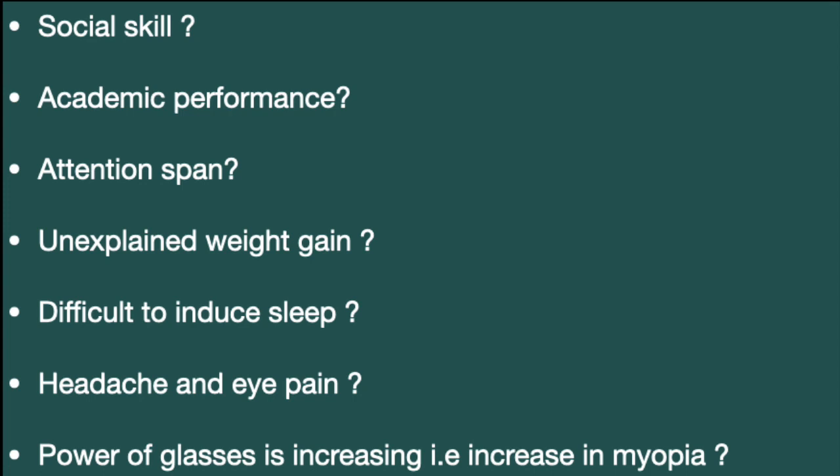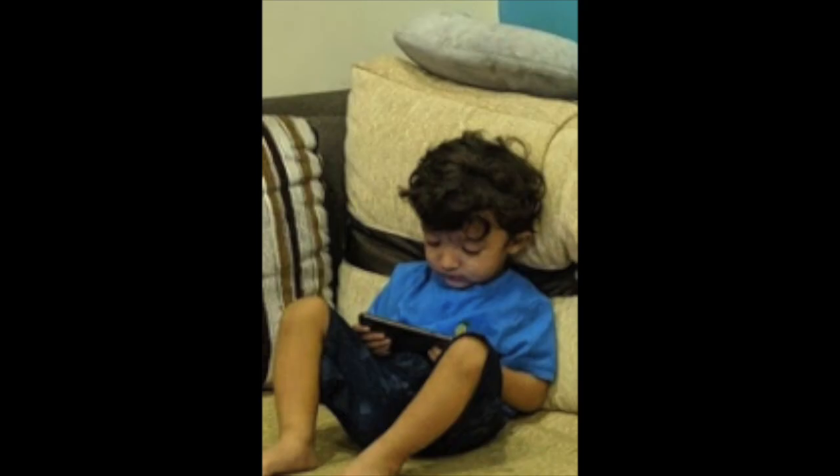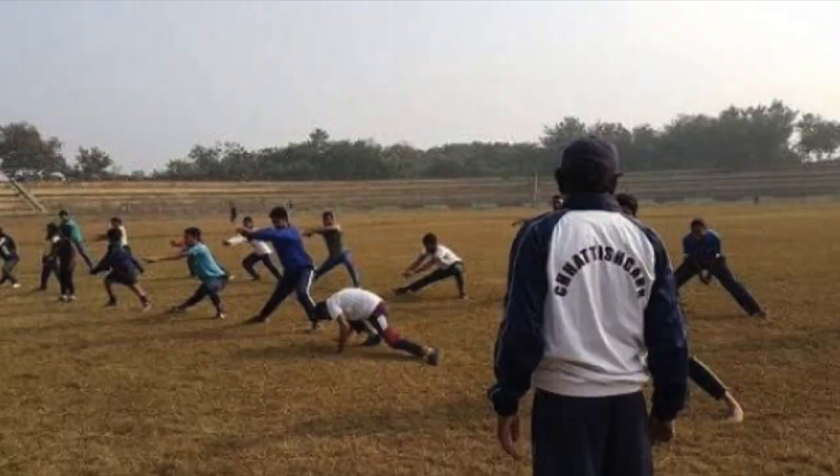So why does this happen? There are two reasons for this issue. One is the increase in screen time — the time when kids are exposed to smartphones, tablets, laptops, or TV — and the second is a decrease in outdoor activity.